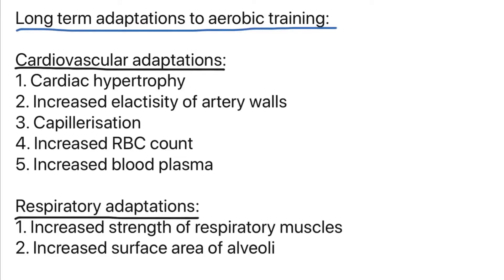Now we need to look at the long-term adaptations to aerobic training. The first are cardiovascular adaptations, which include cardiac hypertrophy, increased elasticity of artery walls, capillarisation, increased red blood cell count, and increased blood plasma. Remember to pause the video and get these notes down.